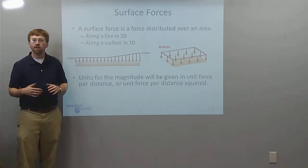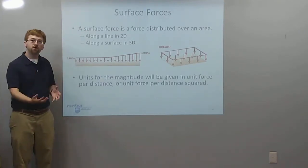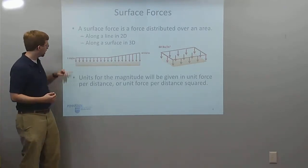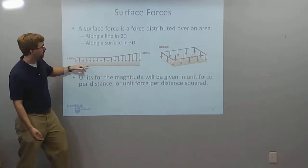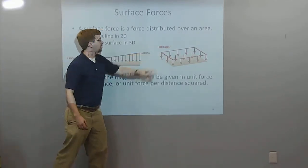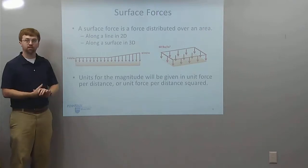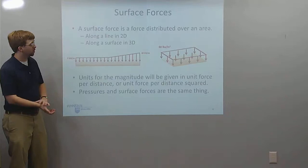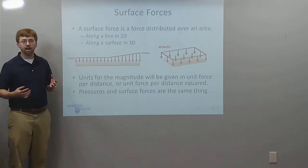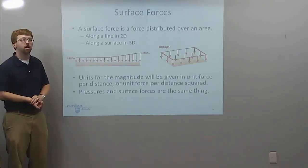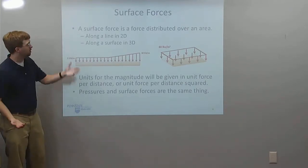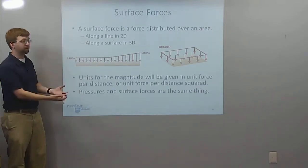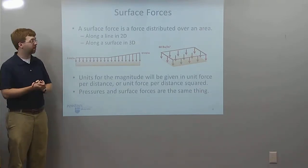The units for surface forces are given in force per distance or force per distance squared — for example, 5 kilonewtons per meter for something like beam weight, or 60 pounds per square inch for water pressure. When we talk about surface forces, we can use that term interchangeably with pressure. A water pressure of 60 psi is the same as a surface force of 60 pounds per square inch.